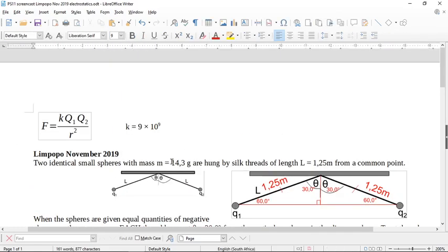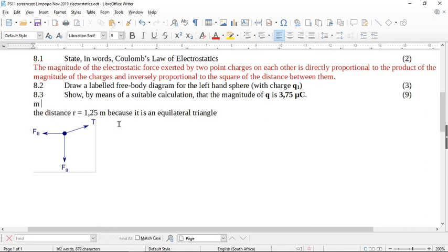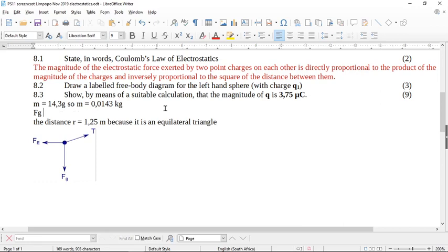We know they told you that m is 14.3 grams. So m equals 14.3 grams. Are we ever allowed to do anything in grams? No, we are not allowed to do anything in grams. So m equals 0.0143 kilograms, okay? So can we find Fg? We can find Fg. Fg equals 0.0143 times 9.8. So we can get a value for Fg.